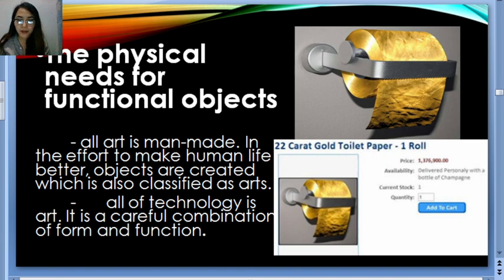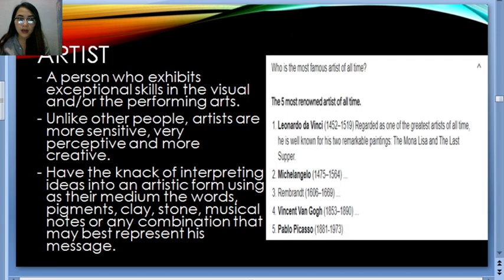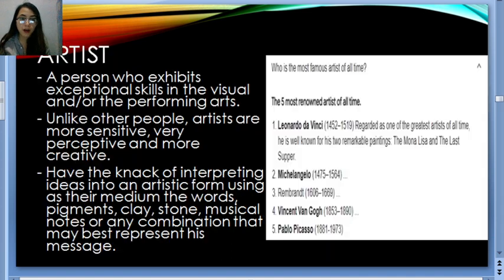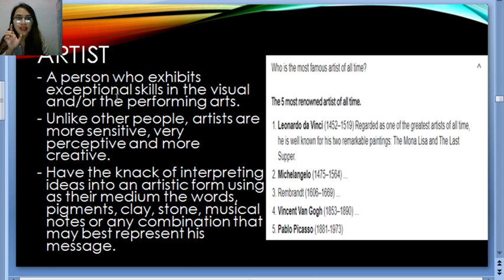Now let's talk about an artist. What is an artist? An artist is a person who exhibits exceptional skills in the visual and/or performing arts. Like other people, artists are more sensitive, very perceptive, and more creative. Most of the time, being an artist is one of the hardest things because most artists are sensitive. So when you easily reject their work, judge it harshly, or give no appreciation, remember what that artist must be feeling.